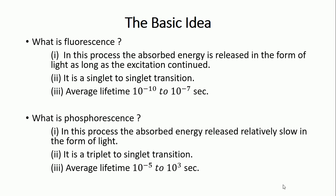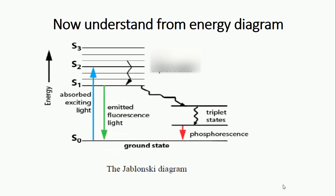If we see the energy diagram, after excitation with light, the electron goes from ground state to higher excited state. In that case, the electron is going from S0 state to higher singlet state.